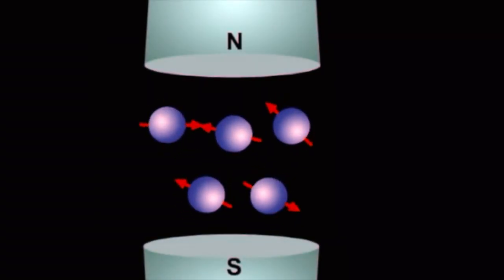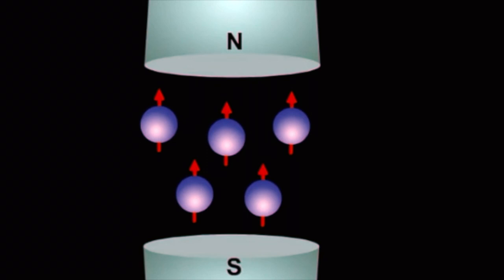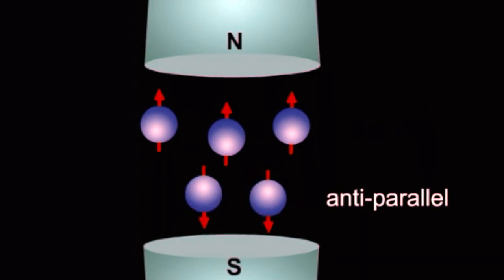When placed in a strong external magnetic field known as B0, the randomly oriented magnetic moments of the hydrogen nuclei align with this magnetic field, some parallel and some anti-parallel.